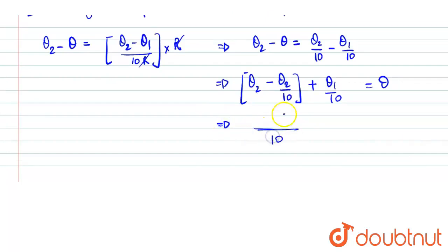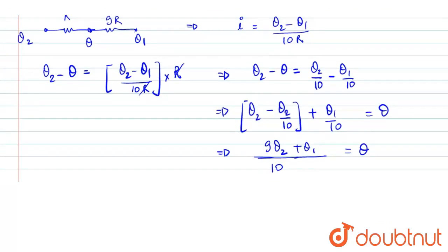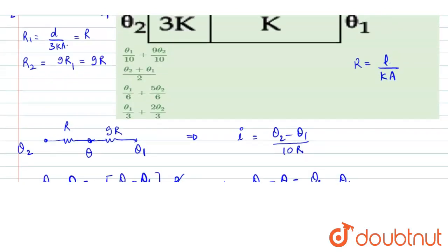We can take 10 as LCM. That is 10 theta2 minus theta2. 9 theta2 plus theta1 whole by 10 is the value of theta, which is given to us in option A. I hope this helps you with the answer. Thank you.